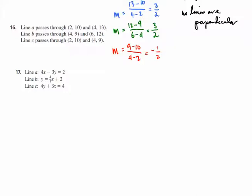First we were given graphs and found slopes from those. Second, we were given pairs of points and found slopes from those. Now we're given equations of lines, so we need to find slopes from the equations and compare them. Unfortunately, not all are already in slope-intercept form, so we can't tell the slopes just by looking.